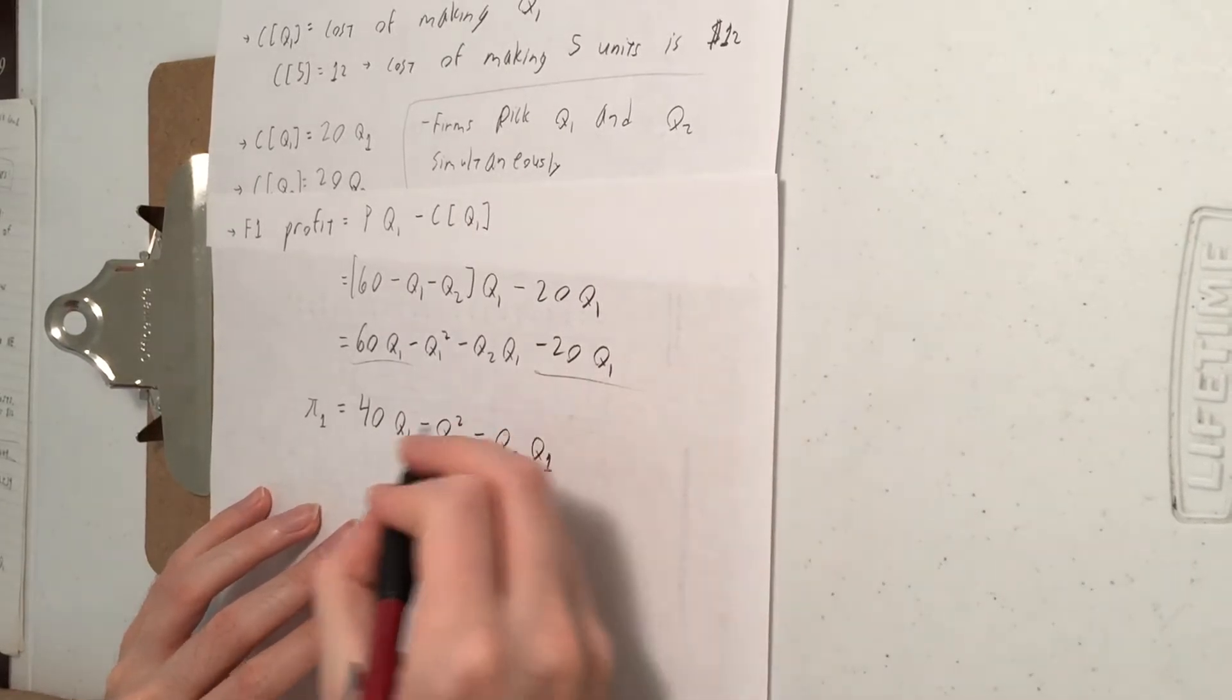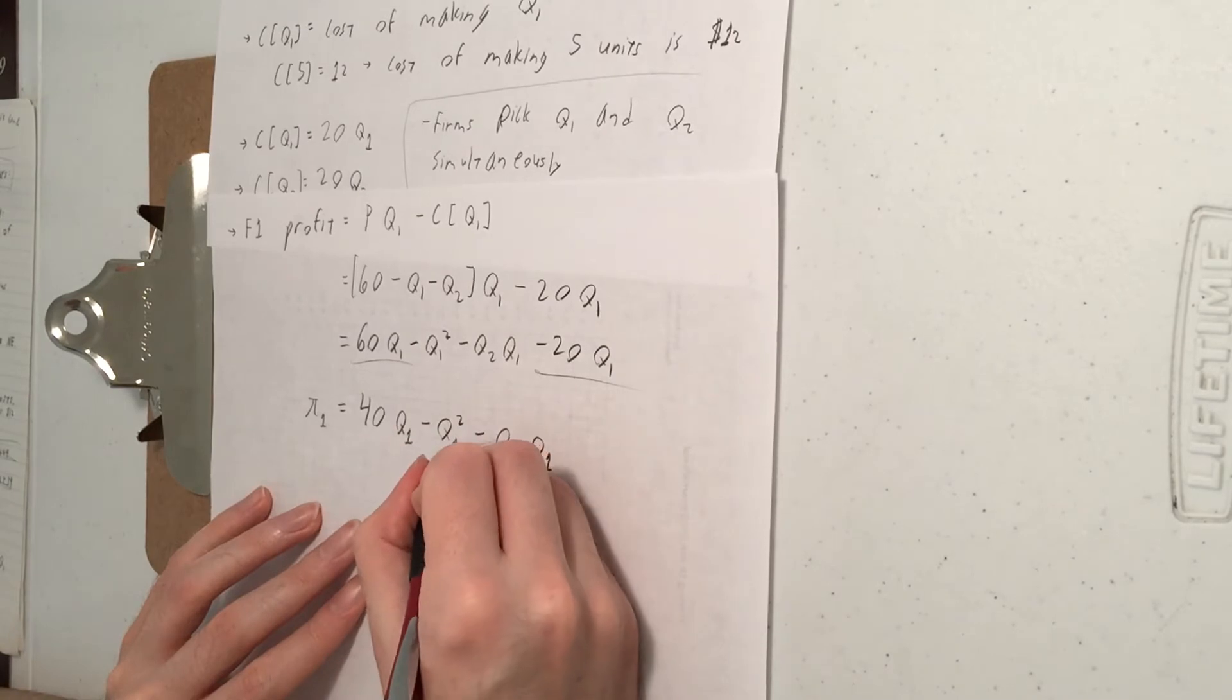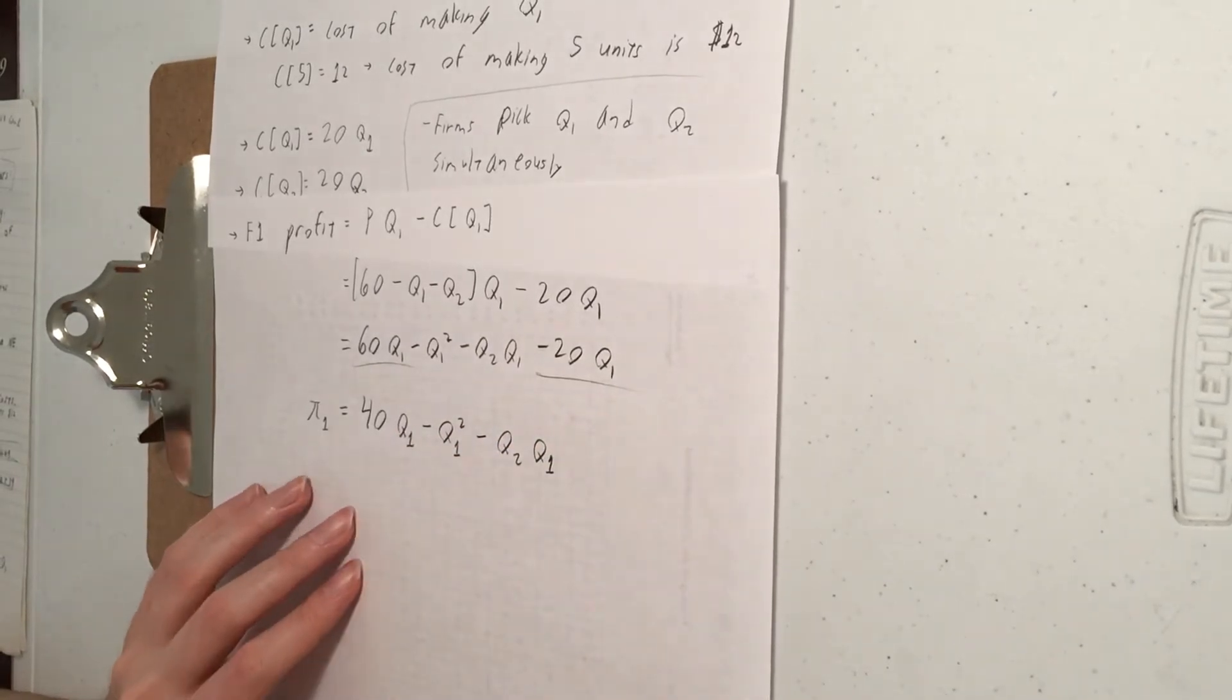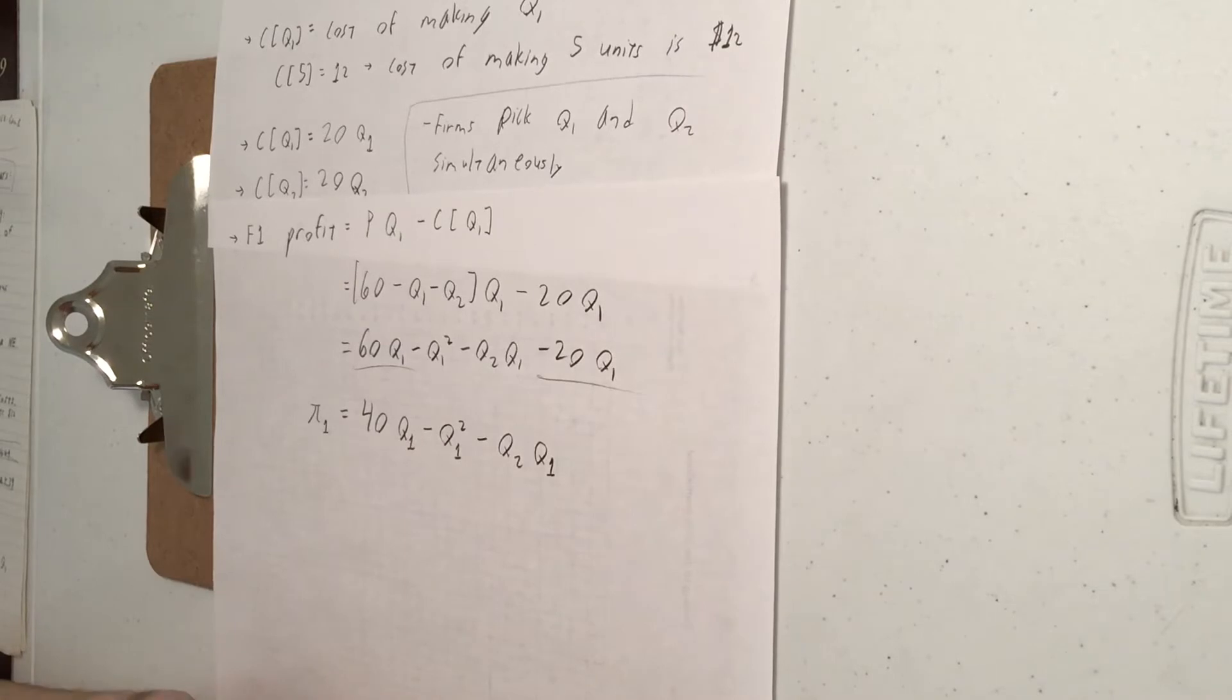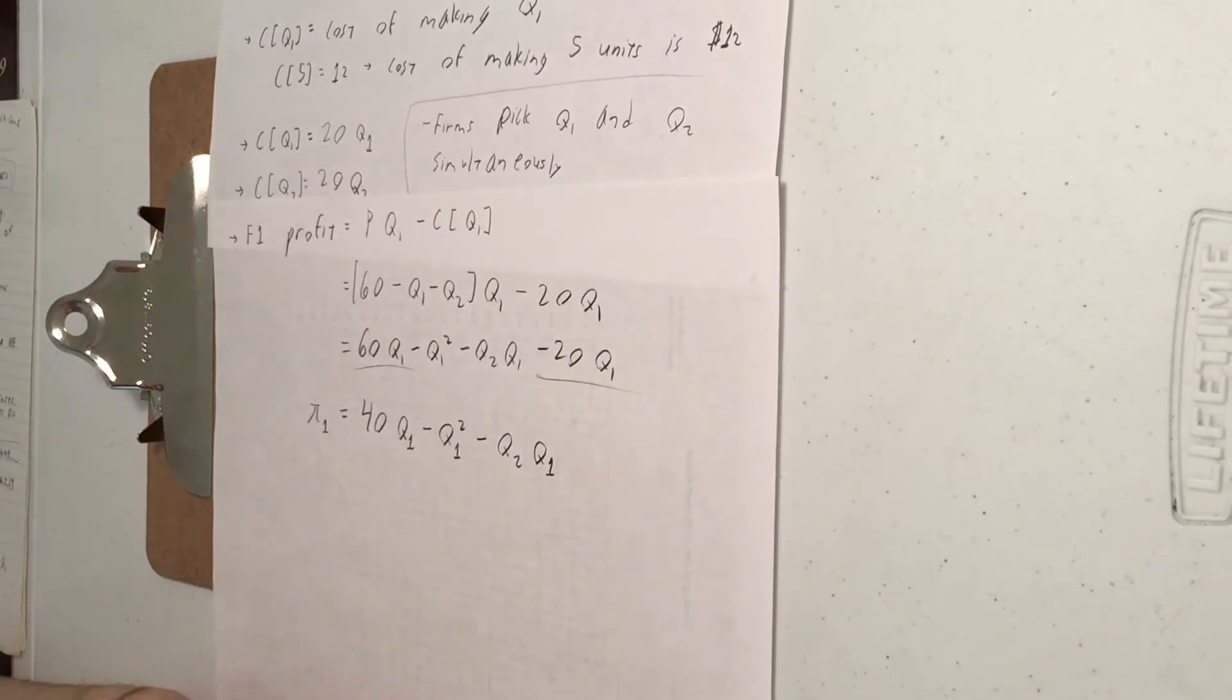So that's going to be 40Q1 minus Q1 squared minus Q2 times Q1. And I'll write that as PI1. So firm one's profit or firm one's payoff. Their payoff is their profit.